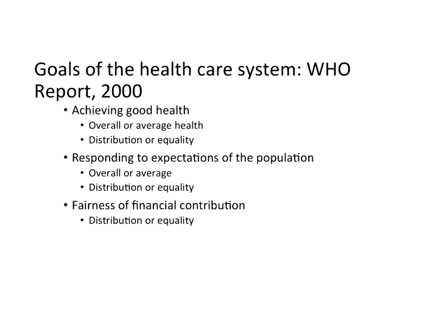Within those categories, they included subcategories for most of them. It's not just the average that matters, but also the distribution — how is the bottom doing relative to the top, and everybody in between. Same with responding to expectations of the population — we want a sense of overall system performance but also how the system performs for those at different parts of the income distribution. Fairness of financial contribution directly touches on issues of distribution, equity, and equality.